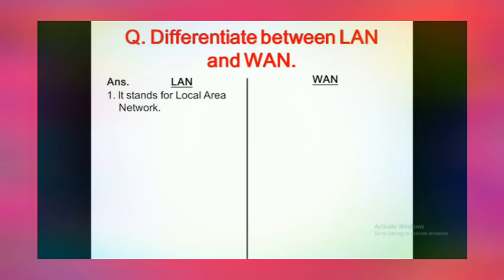The first question is: differentiate between LAN and WAN. We have to write the difference between LAN and WAN. We draw a line in between and on one side we write LAN and on the other side WAN. The first point in LAN is it stands for Local Area Network, and the first point in WAN is it stands for Wide Area Network.